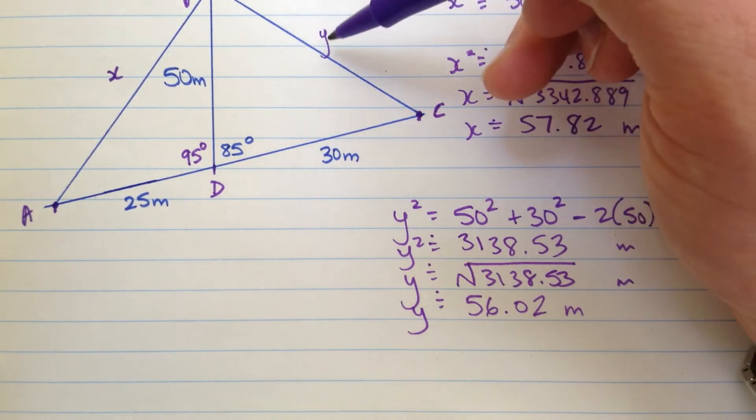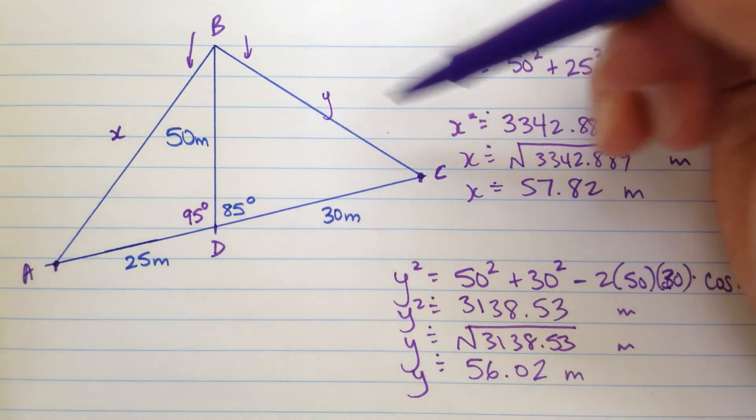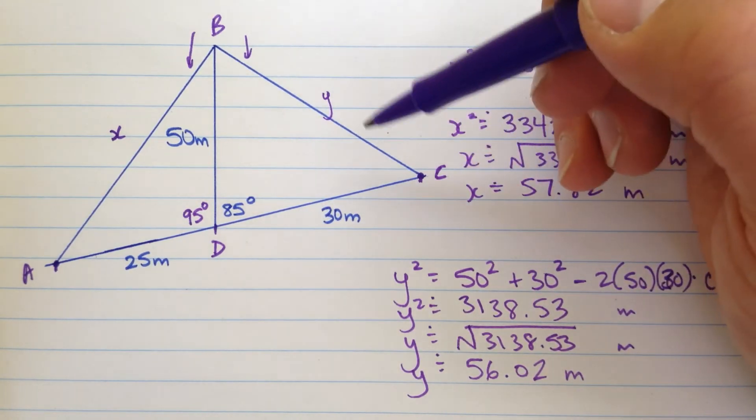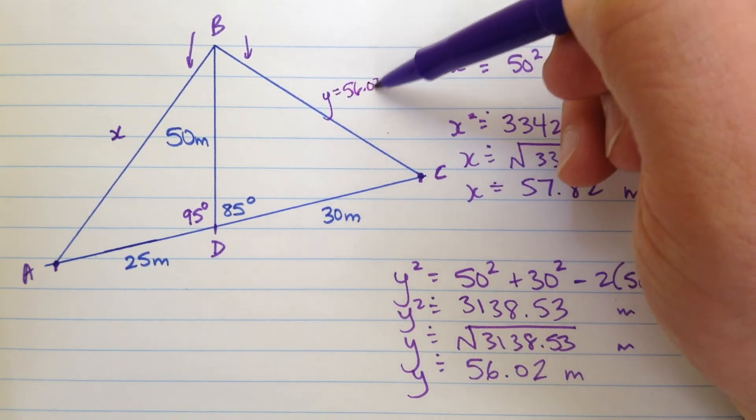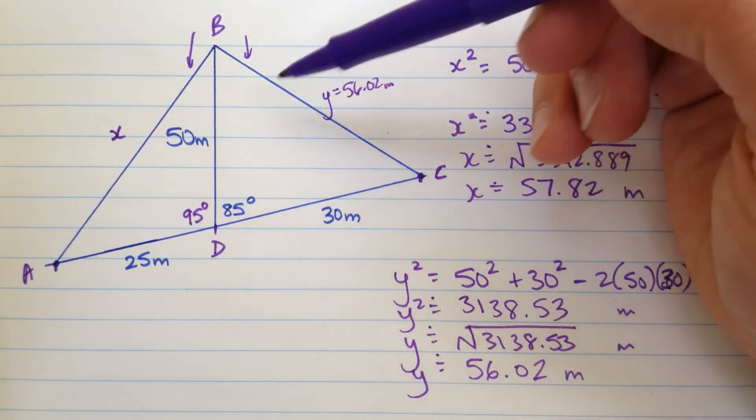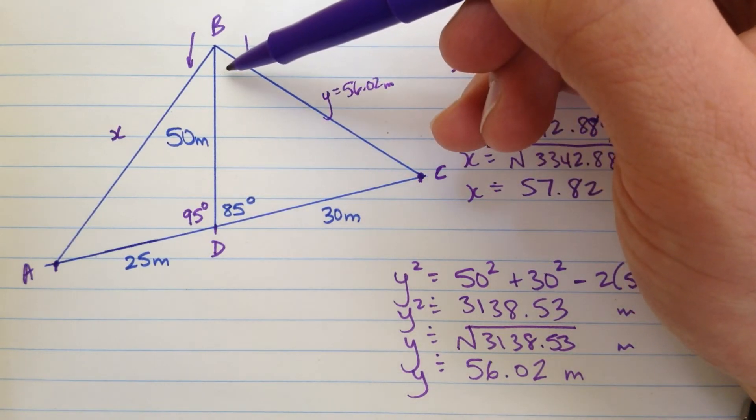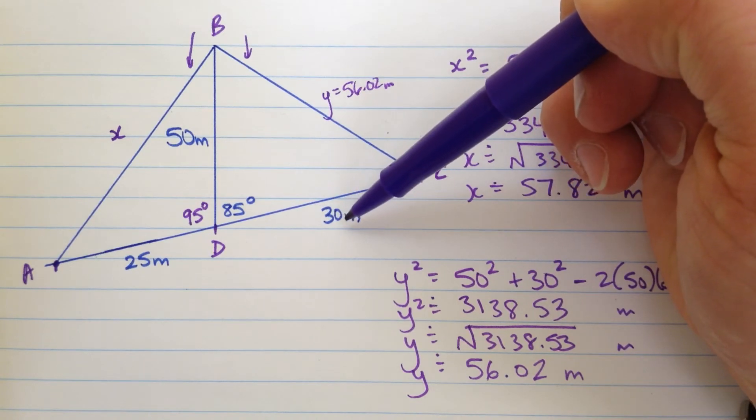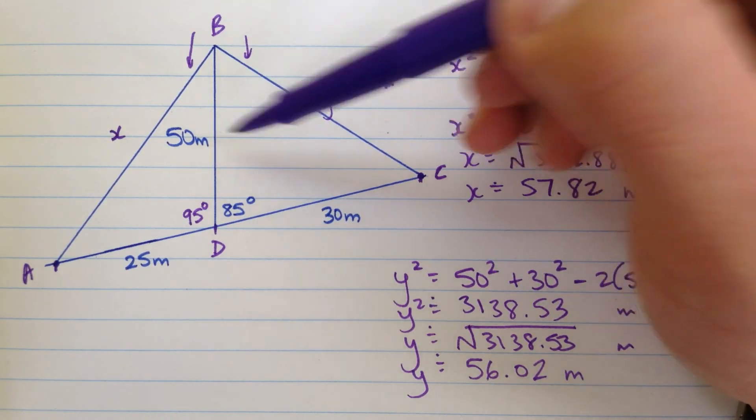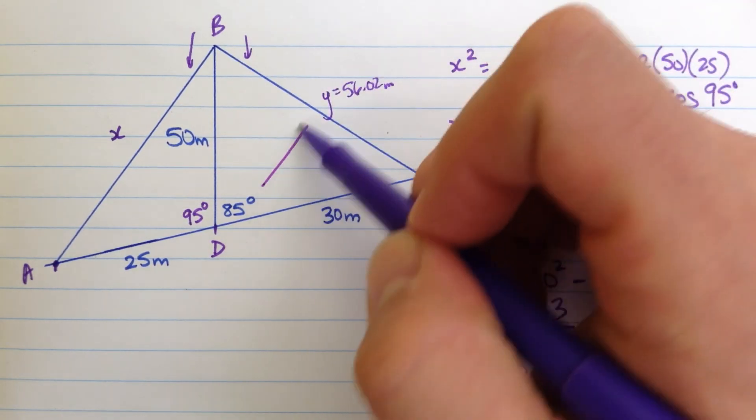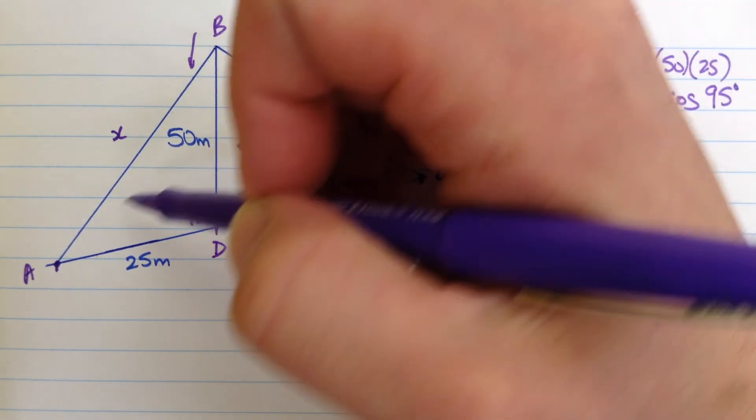So that again is across from this angle 85 here. And these two angles must be smaller. Now that's all the information that I was really looking for. There is enough here now if you want to. You know this value here, 56.02 meters. You've now got a side and the opposite angle. You could find this angle here using sine law because you know this side over here. Similarly, this angle you can find using sine law because you know this side over here. And you've got the situation that you want.